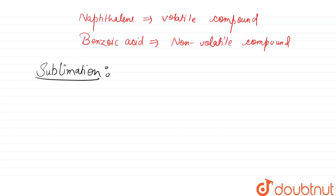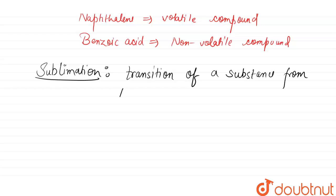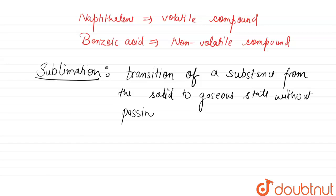Sublimation is a process of transition of a substance from the solid to gaseous state directly, without passing through the liquid state on heating, and vice versa on cooling.